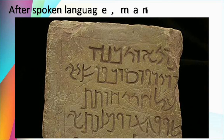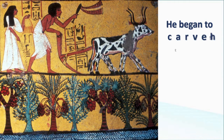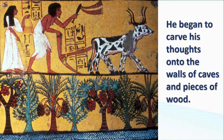After spoken language, man invented writing. The script changed slowly from spoken language to written information. We got evidence of this from caves. He began to carve his thoughts onto the walls of caves and pieces of wood. You have studied in history how this slowly progressed from the ancient period towards the advanced period — from stone age to medieval to modern age.